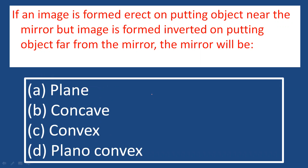An inverted image is not formed by a plane mirror, so that is ruled out. A convex mirror is a diverging mirror and always forms a virtual, erect image — it cannot form an inverted image. So the answer is a concave mirror.